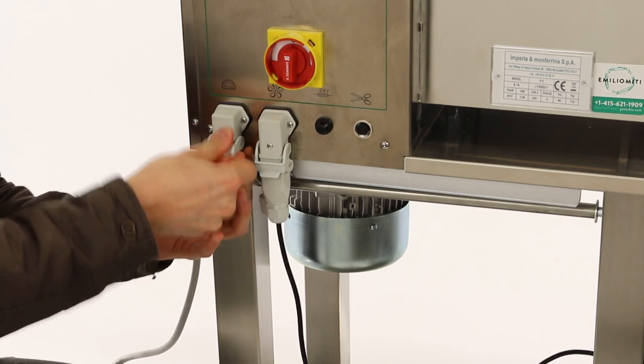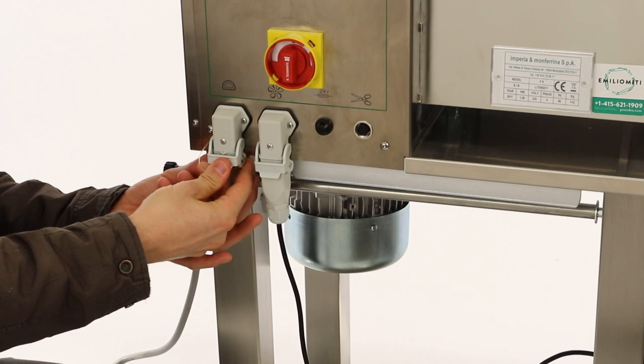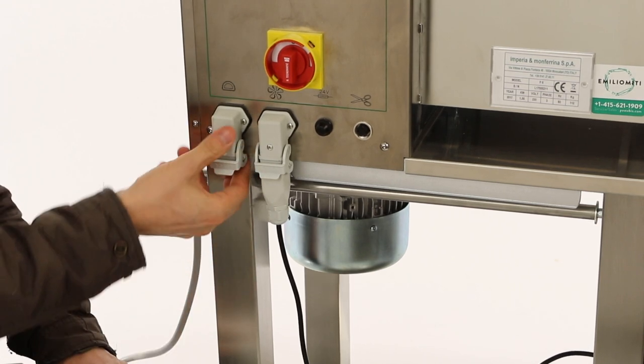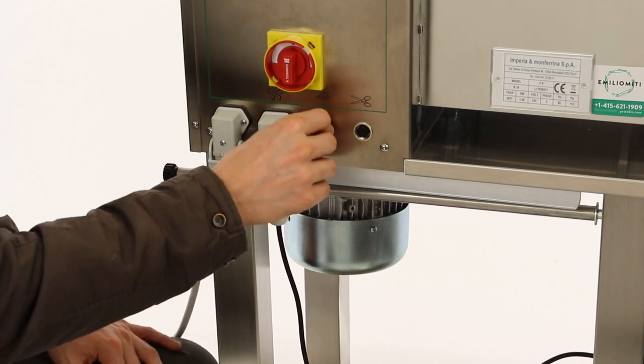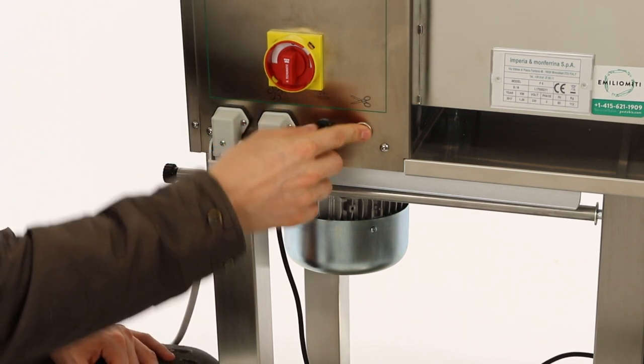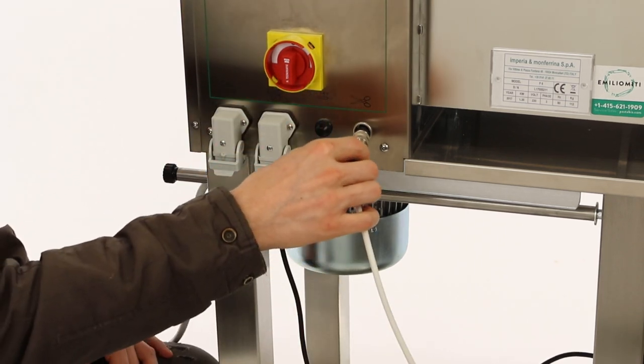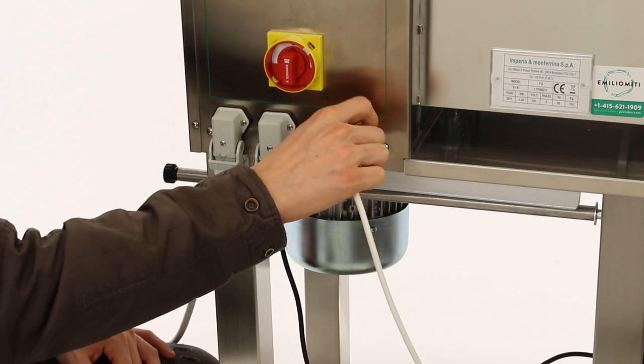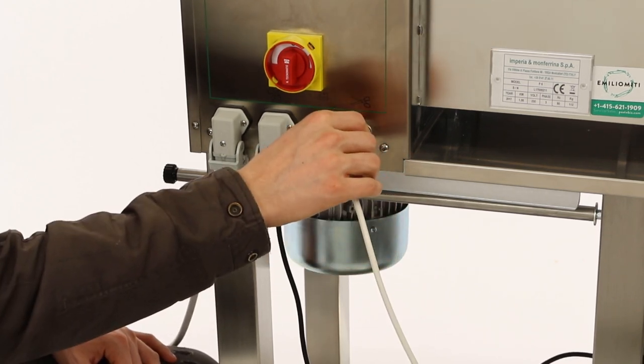You'll notice that each connector has a dust cap to prevent flour, water, or any kind of debris from getting inside those contacts. When they're not in use, keep them covered. Over here we have the fuse for the 24 volt system, which is the pasta cutter. Here's the connector for the pasta cutter. That gets inserted and then rotated to the right, and that'll hold it in place.